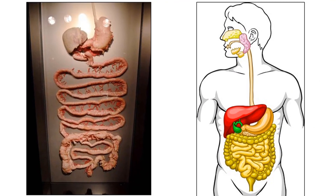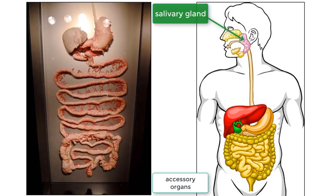Next, let's discuss the accessory organs. The first would be the salivary glands. When you are chewing your food, these glands release saliva that contains an enzyme called amylase, which begins to break down carbohydrates like starch while you are chewing.